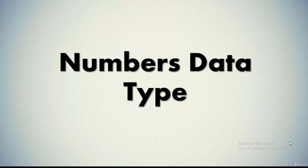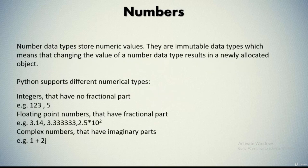In this video we'll understand something about number data types in Python. Number data types store numeric values in Python. They are immutable data types, meaning changing the value of a number data type results in a newly allocated object. Number objects are created when you assign a value to them.